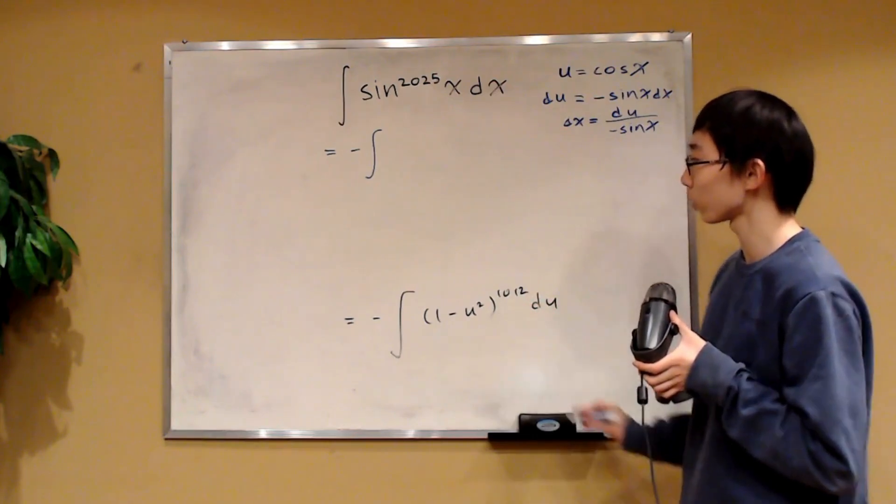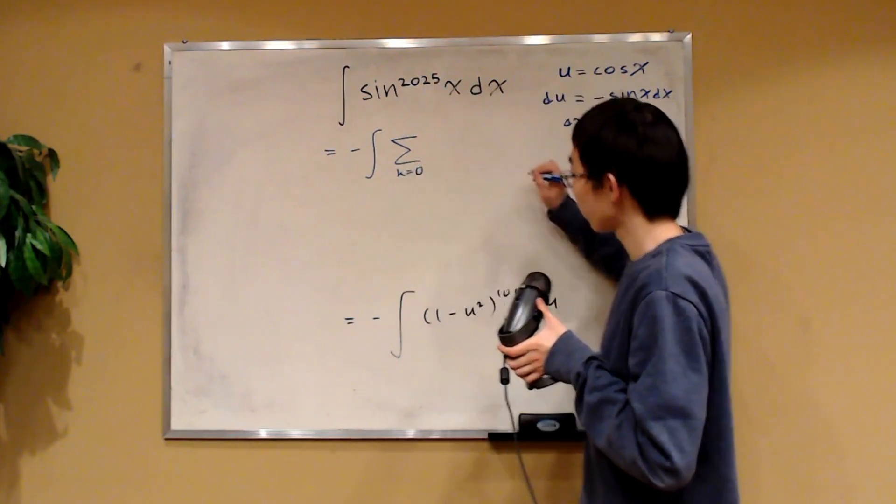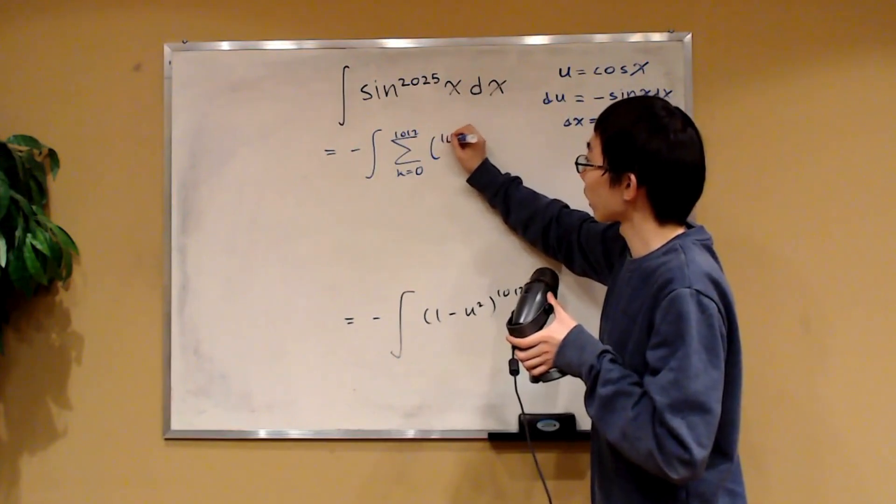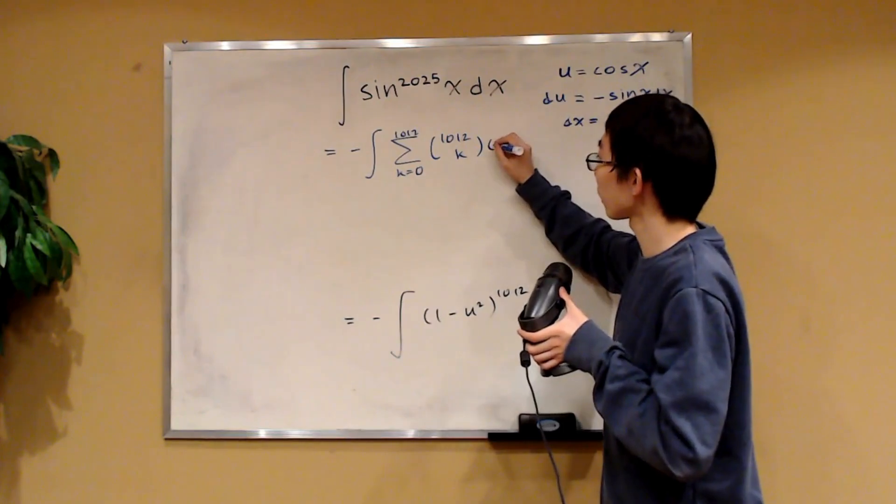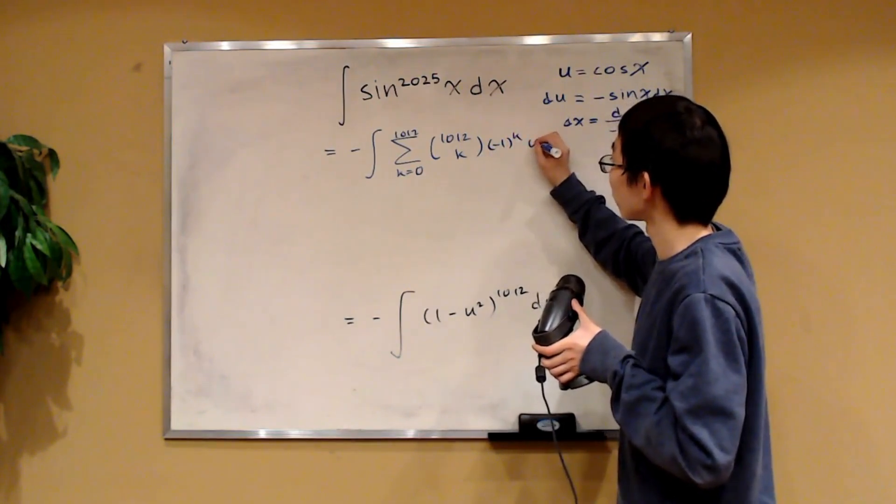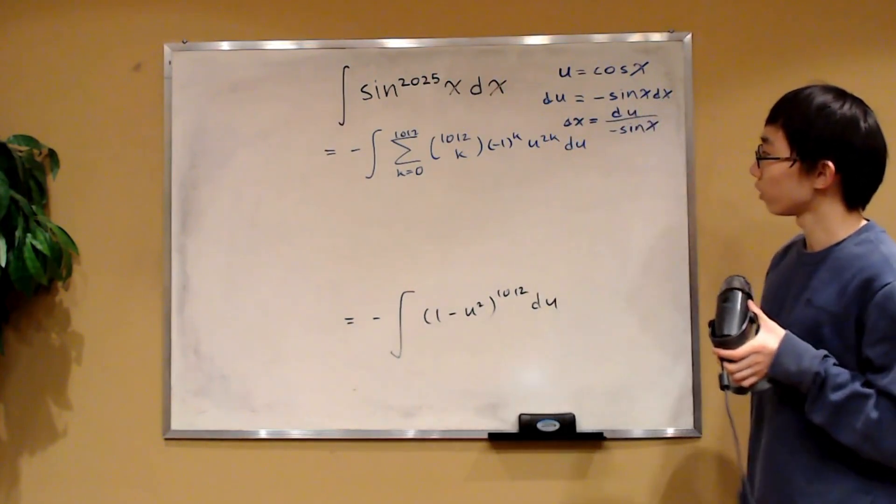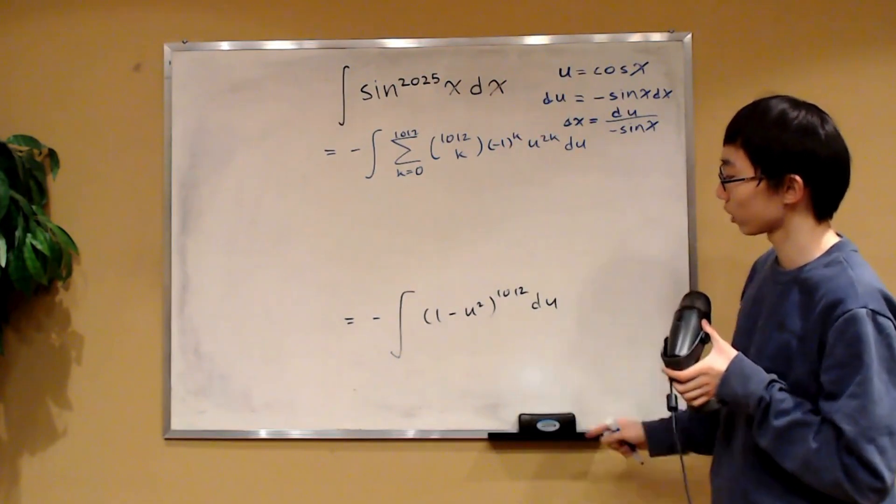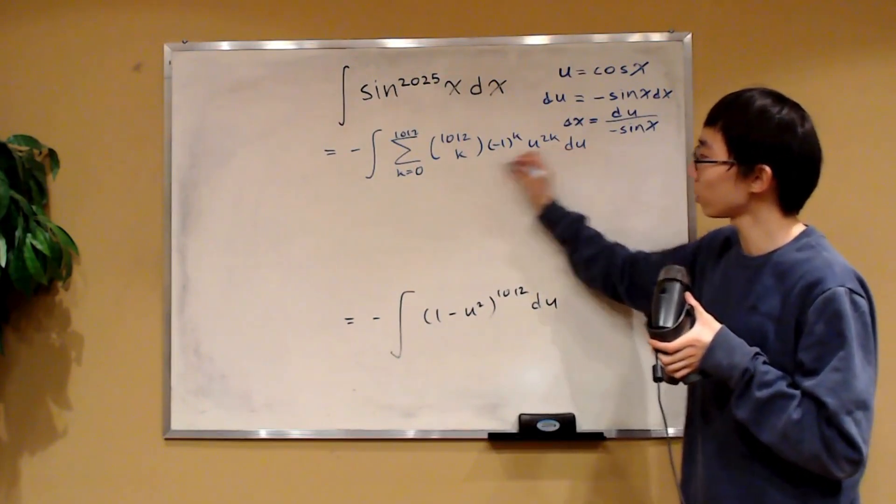By the binomial theorem, this over here is equal to the sum as k goes from zero up to 1012 of 1012 choose k, and then times negative one to the k times u to the 2k du. And note that this negative sign, this negative one to the k comes from the fact that it's minus u squared. So this is our integrand over here.